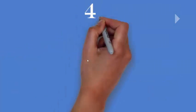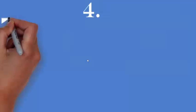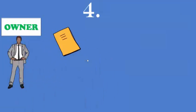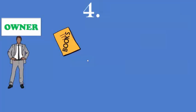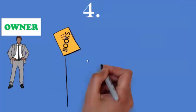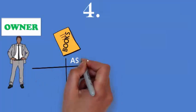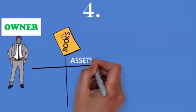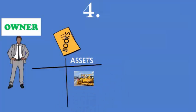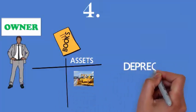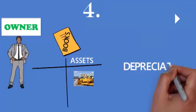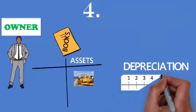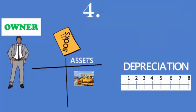That tax will be an outflow for him. The fourth factor he is going to consider is related to depreciation. He is the owner of the asset, so this asset is reflected on the asset side of the balance sheet. On this asset, what he is going to claim is depreciation as per the life of the asset.